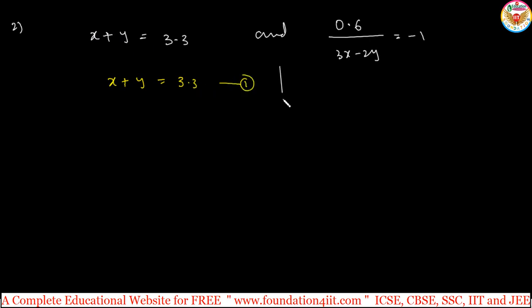Second equation, you have to make it general form: x term, y term and constant. So 0.6 is equals to minus 1 times, take the right side, 3x minus 2y, that is minus 3x minus into minus plus 2y, 0.6. Negative 3x plus 2y is 0.6. So if you multiply with minus on both sides, then plus 3x minus 2y is minus 0.6. So that will be equation 2.